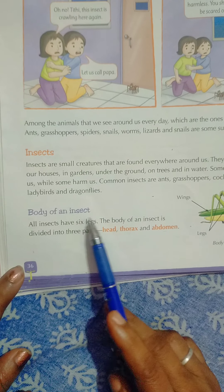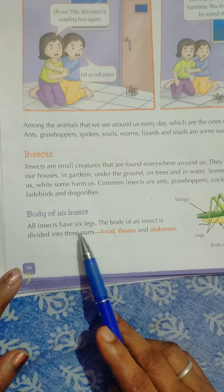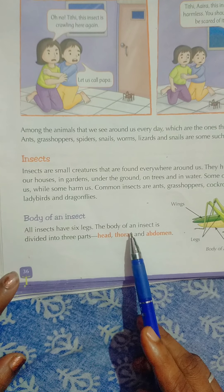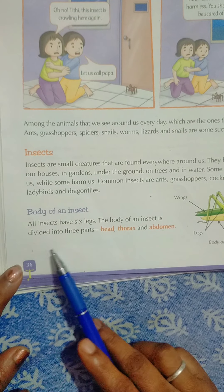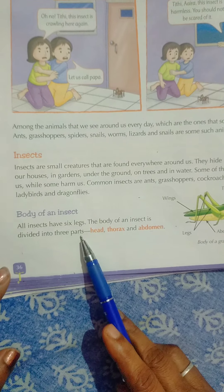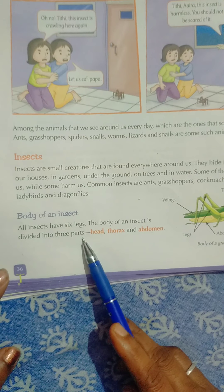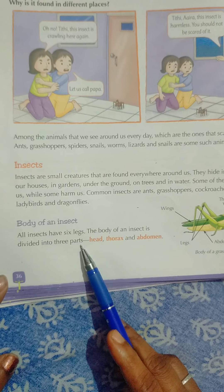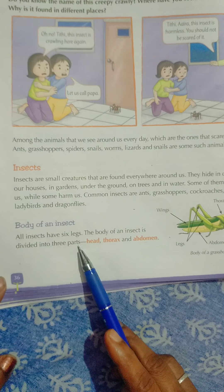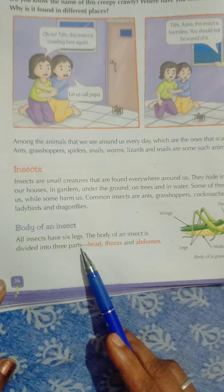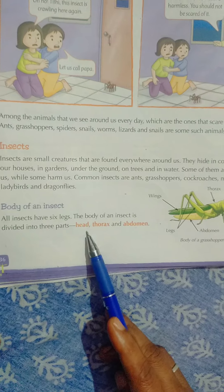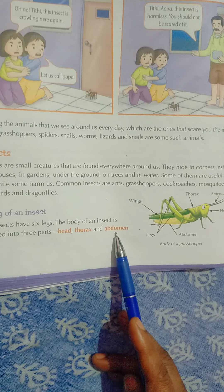Body of an insect: all insects have six legs. The body of an insect is divided into three parts. सभी insects का शरीर होता है। Insect का शरीर तीन हिस्सों में बाँटा जाता है: Head, Thorax, Abdomen।